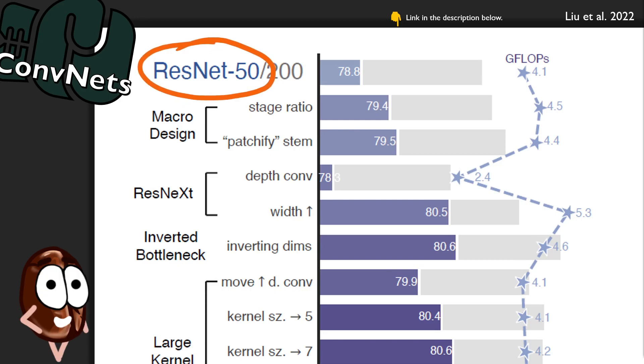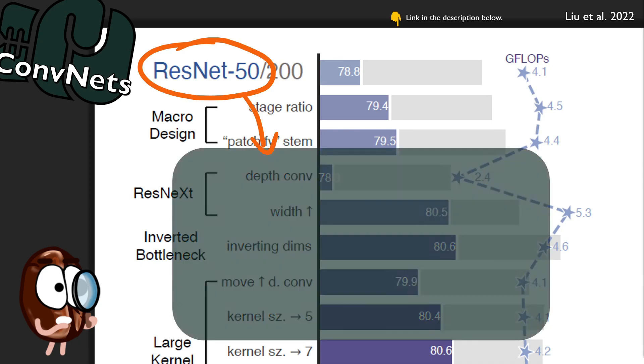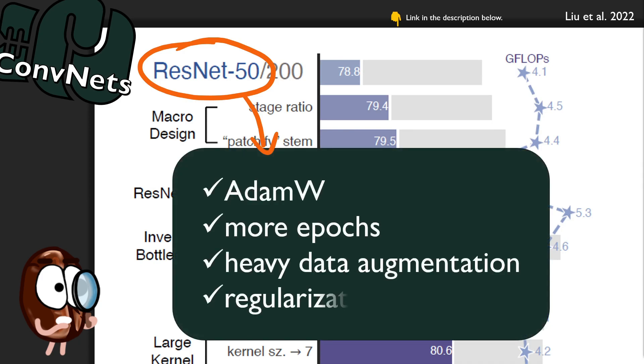Well, first, and above all, the authors train it with similar training techniques as vision transformers are trained with. They use the ADMW optimizer, use more epochs, heavy data augmentation, regularization. All of this increased the performance of the ResNet-50 from 76.1% to 78.8% on ImageNet Top 1 accuracy. So wow, lesson learned, I will not forget about these ingredients when baking my CNN-based models.